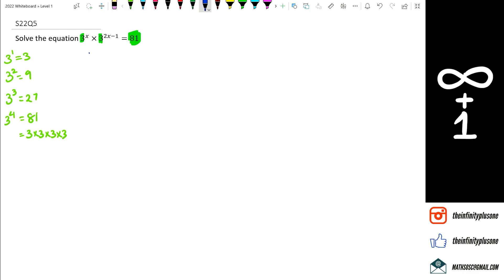So going with this question, we're going to write this as 3 to the power of x multiplied by 3 to the power of 2x minus 1 equals 3 to the power of 4. And we know that because 3 to the power of 4 is equal to 81.